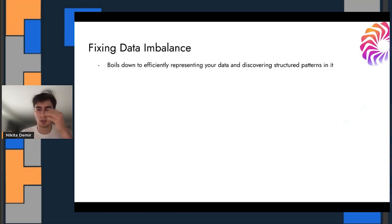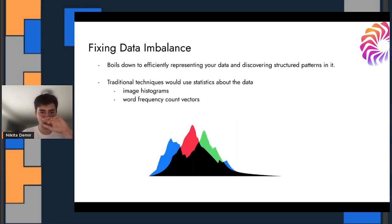So how does one fix data imbalance? Really, the first step is figuring out a way to represent the data because once you have a good representation of it, hopefully that representation helps you discover these patterns where some regions are more common than others. Traditionally, this would look like features and statistical features on the data. For example, image histograms or word frequency count vectors, the n-grams, things like that. These were kind of more historical ways to categorize your data in a way that you could then look for distributional differences.